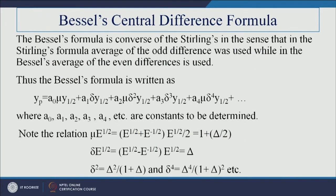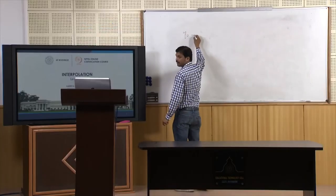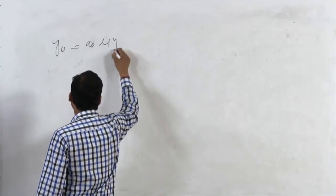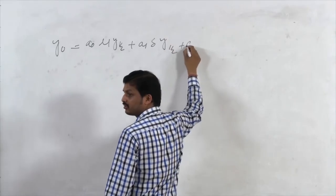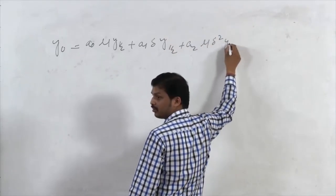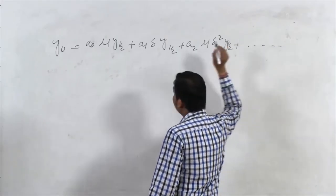Bessel's central difference formula uses the opposite approach to Stirling's — instead of averaging odd differences, it averages the even differences. So the A₀, A₂, A₄ terms use the average operator μ. The formula is: Yₚ = A₀·μY(½) + A₁·δY(½) + A₂·μδ²Y(½) + ...